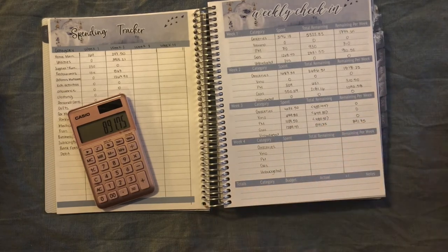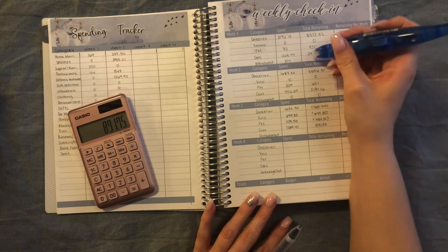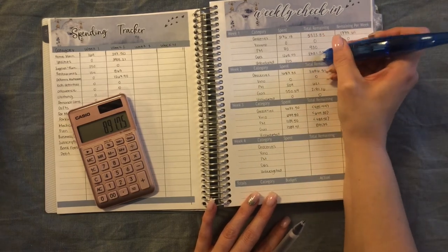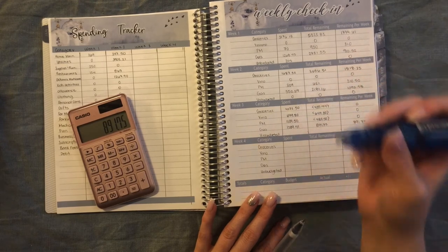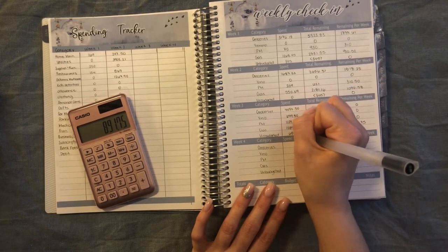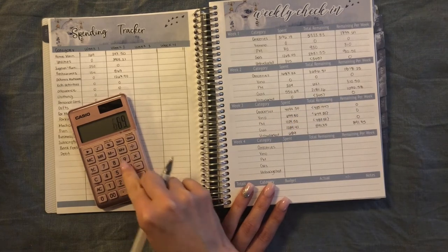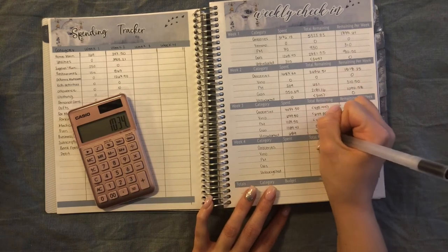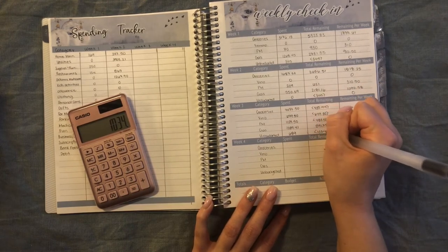And then of course unbudgeted - we don't budget anything for unbudgeted, but we did spend $689 there because we took the kids to the pool, which puts us at $1,034 and we have nothing remaining there.